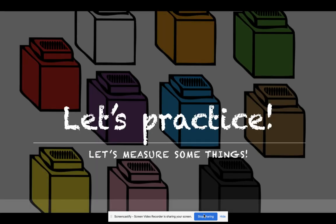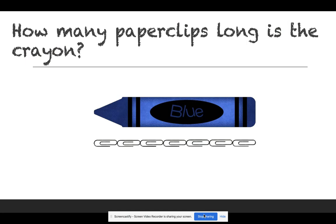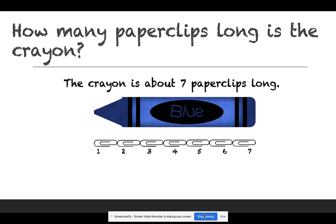Let's practice measuring some things. How many paperclips long is the crayon? Let's count: one, two, three, four, five, six, seven. The crayon is about seven paperclips long.